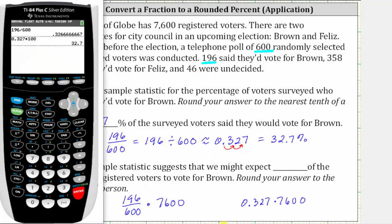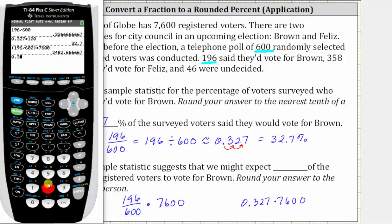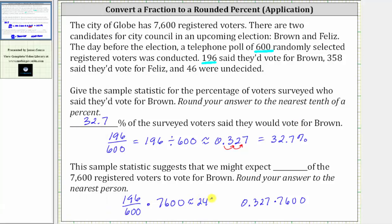We are told to round to the nearest person. Using the fraction 196 over 600 times 7,600, to the nearest whole number we get 2,483 — we round up because of the six in the tenths place value. Using 0.327 times 7,600, we get 2,485. The 2,483 is more accurate. So we expect 2,483 of the 7,600 registered voters to vote for Brown.